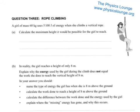Question 3. We've got a girl climbing a rope. The girl of mass 60 kilograms uses 5100 joules of energy when she climbs a vertical rope, presumably climbing it vertically upwards. Calculate the maximum height it would be possible for the girl to reach.